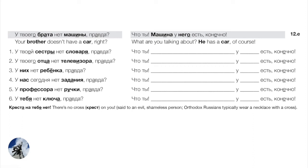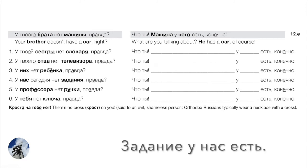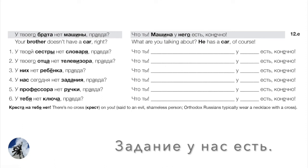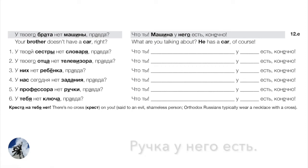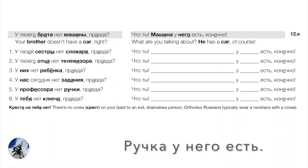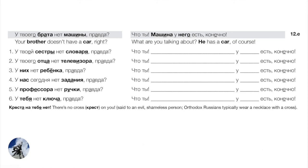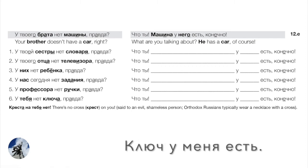Number four: У нас сегодня нет задания, правда? — Что ты? Задание у нас есть, конечно — back to the nominative задание. Number five: У профессора нет ручки, правда? — Что ты? Ручка у него есть, конечно — of course a pen is at him. Number six: У тебя нет ключа, правда? — Что ты? Ключ у меня есть, конечно — I do have a key.